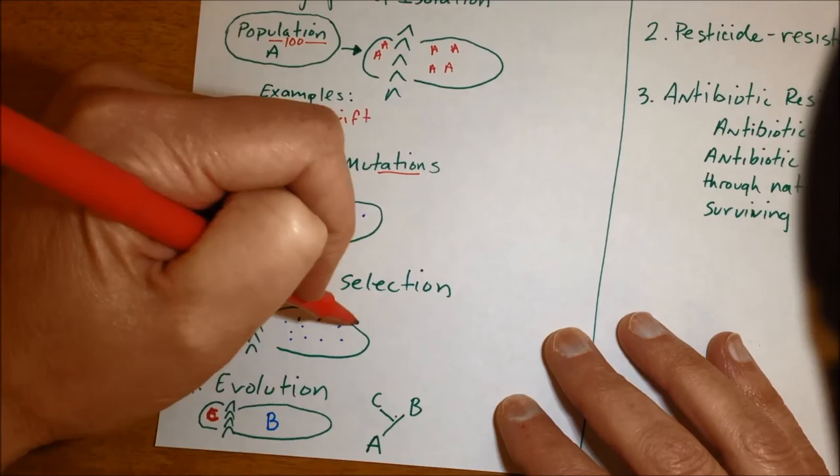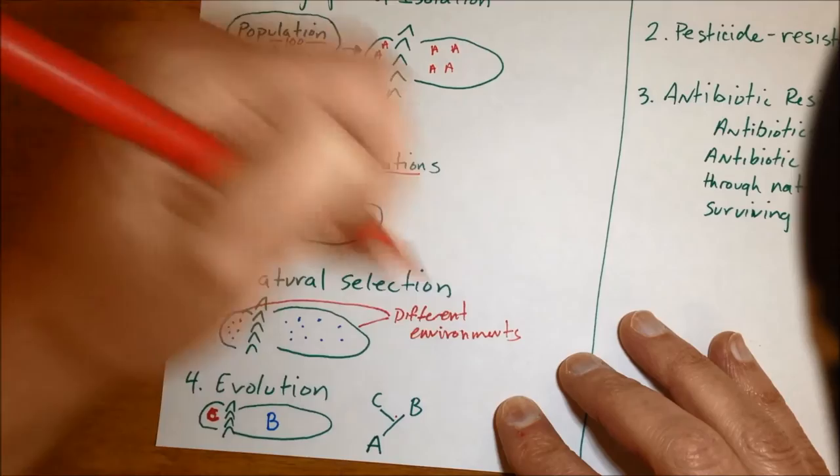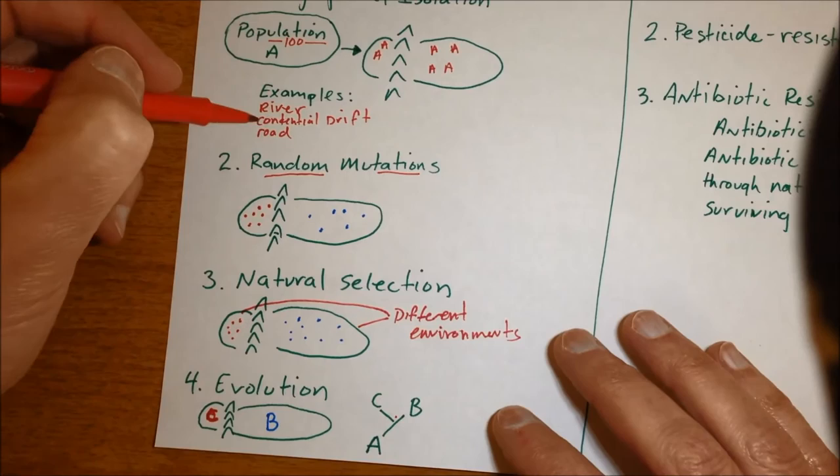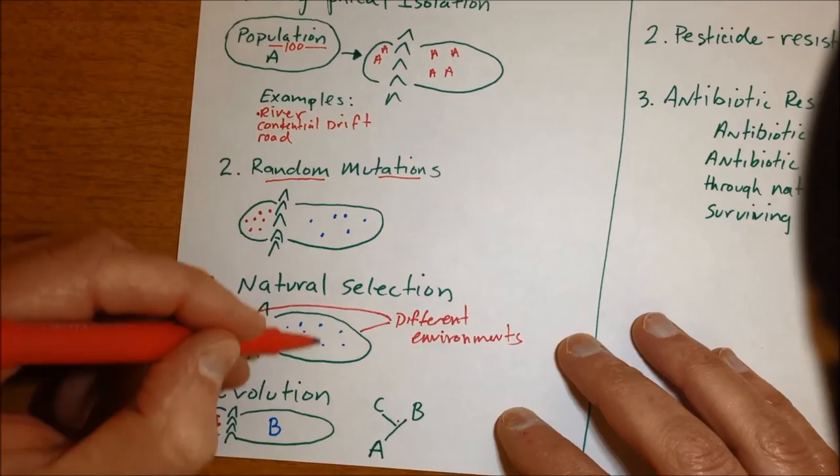Sometimes this process can be accelerated if you actually have in the case of a mountain range if you have different environments on either side of the mountain that can make it happen faster but ultimately even if it's just across a river which still would have the same environmental conditions on either side of the river you still can have natural selection changing over time as the random mutations get accumulated in the population.